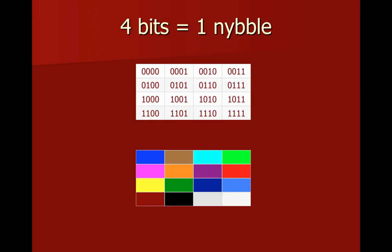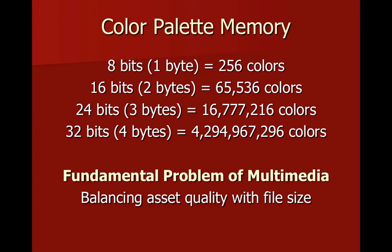If I start allocating more memory — so instead of one bit, I give it four bits, or a nibble (programmers think they're very clever when they name things) — that gives me up to 16 combinations of ones and zeros, so I can map 16 colors. If I give more memory, 8 bits, I can have 256 colors, up to 32 bits, which gives me over 4 billion colors to work with.